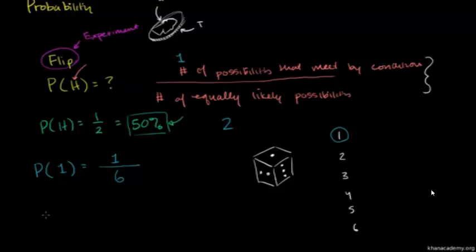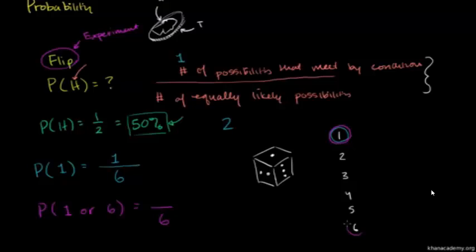What is the probability of rolling a one or a six? Well, once again, there are six equally likely possibilities for what I can get. And there are now two possibilities that meet my conditions — I could roll a one or I could roll a six. So there is a one-third probability of rolling a one or a six.